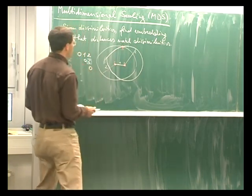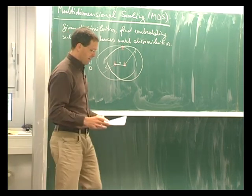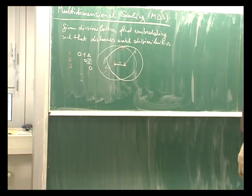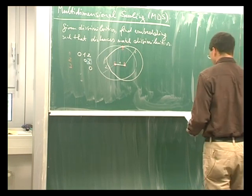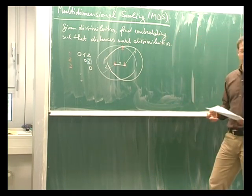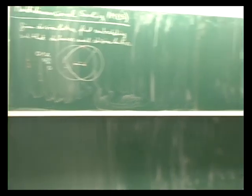So not all dissimilarities allow faithful embedding in Euclidean space. In general, there is a very large number of dissimilarities. You can for instance, if the original data is binary, you can think of different coefficients.